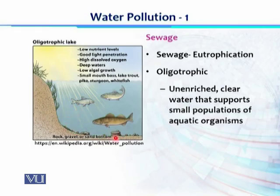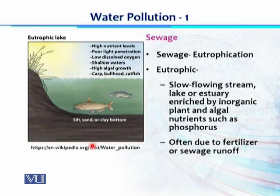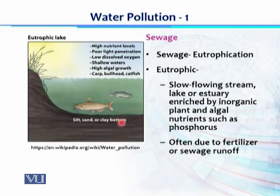In balanced oligotrophic conditions, all species are evenly consuming available resources. But opposite to that, in the case of eutrophic sewage, nutrient-rich sewage water is released into a water body — which could be an ocean, sea, river, or stream. The natural environment becomes imbalanced: there is a high nutrient level, poor light penetration due to particulate material, low dissolved oxygen, shallow water because of sediment deposition, and algae that grow rapidly, consume oxygen, and suffocate other species. This is one of the major disadvantages of water pollution.